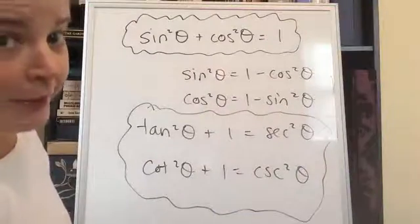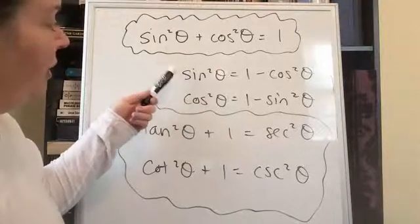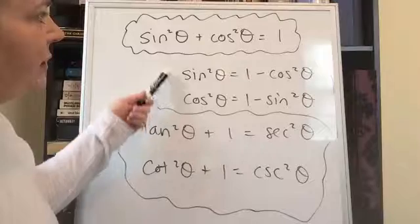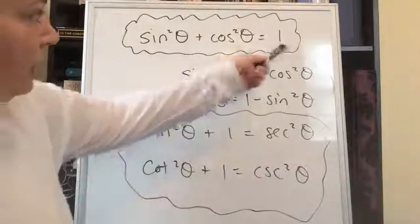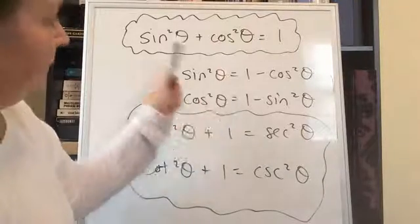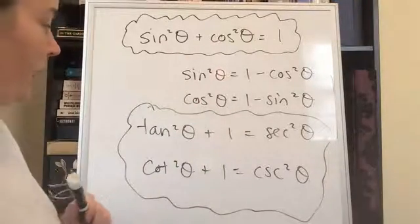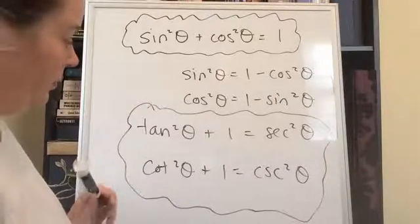So to recap, we know sine squared plus cosine squared equals one. Then you should be comfortable with the variations of this identity. That sine squared is equal to one minus cosine squared. You would just subtract the cosine to the other side. Or cosine squared equals one minus sine squared. Subtract the sine squared. And then these two other identities that I was able to derive from sine squared plus cosine squared equals one.